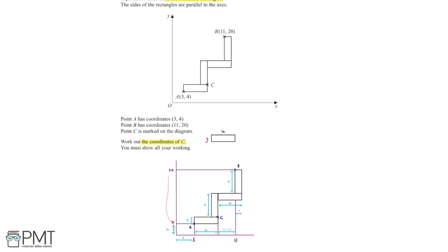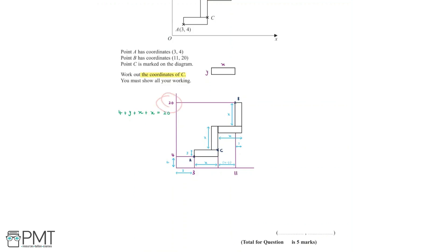We can say that this vertical length is equal to 20. The vertical length of 20 is equal to this length, plus this small length, plus this length, plus this length. We know the length of each of these four parts, and so we can say that the vertical length equals 4 plus y plus x plus x, which equals 20.